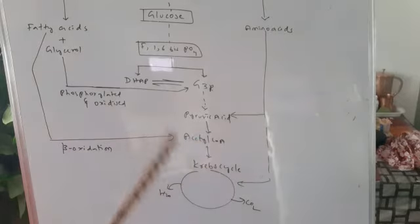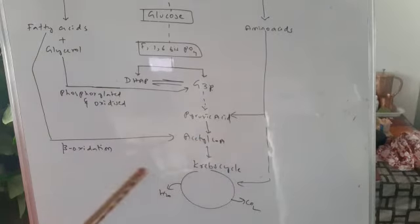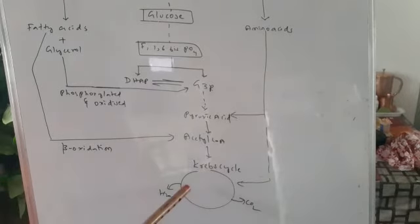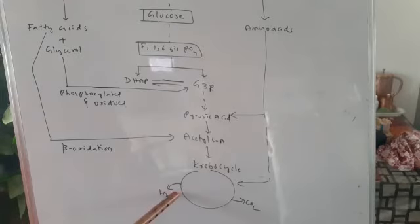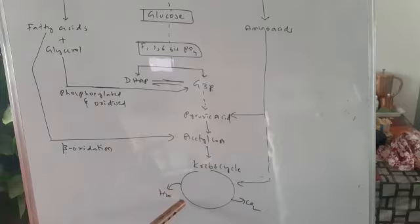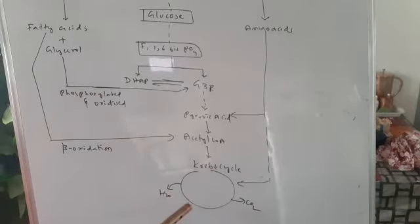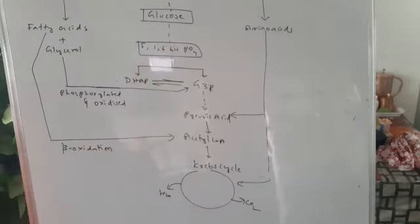A lot of energy is released, and reduced coenzymes are also released. ATP is directly produced, and the reduced coenzymes enter into the electron transport chain, producing a lot of ATPs. That completes the aerobic respiration pathway.